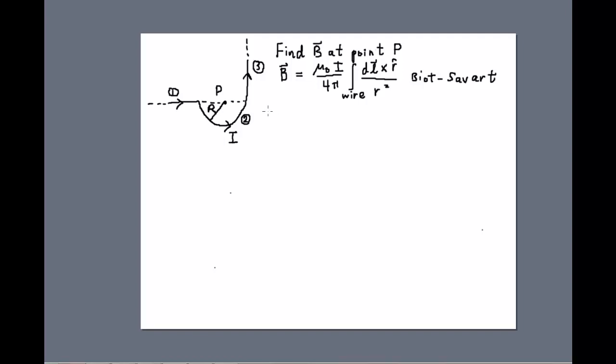So let's look at the results of B1, B2, and B3 separately and then we'll put them together. So what do we know about B1? Well, let's first draw in dL and R hat for this segment for a piece of current. I'll use the arrow that exists there and call that dL1.